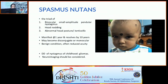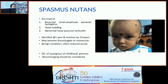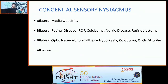Spasmus nutans is an interesting triad of binocular small-amplitude pendular nystagmus, associated head nodding, and abnormal head posture or torticollis. It manifests in the first year of life and resolves by the first decade; it is usually a benign condition with some reduced visual acuity. However, regarding any childhood nystagmus, always consider the important life-threatening differential diagnosis of glioma. Before concluding it is benign, order neuroimaging — that will be safe.